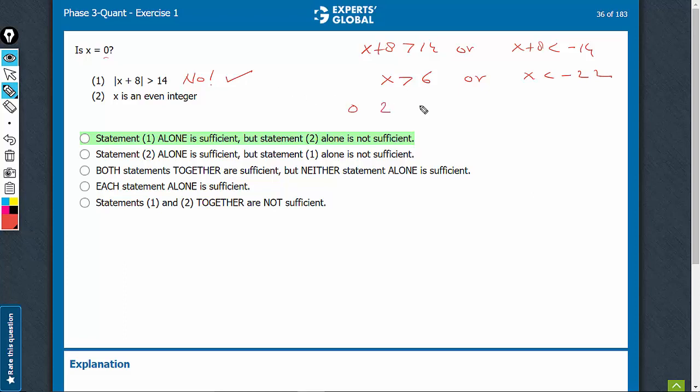When x is equal to 2, 4, 6, 8, we get no. So yes as well as no are possible, and therefore, 2 is not sufficient.